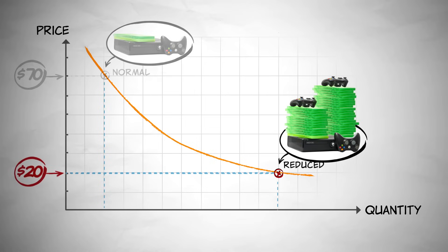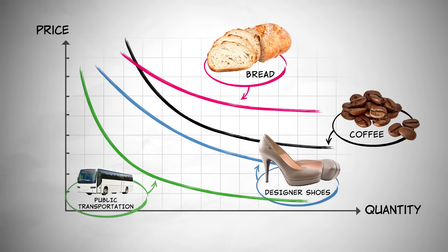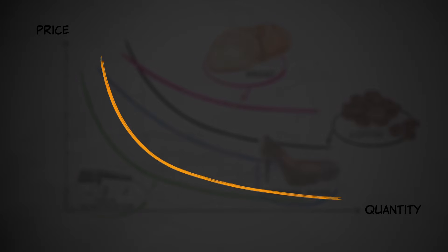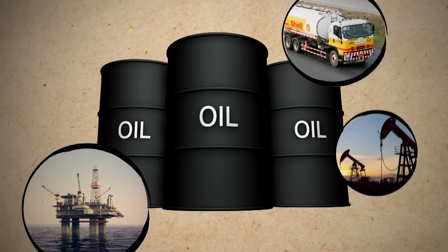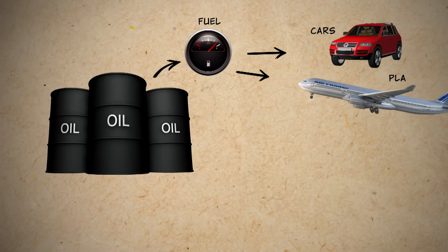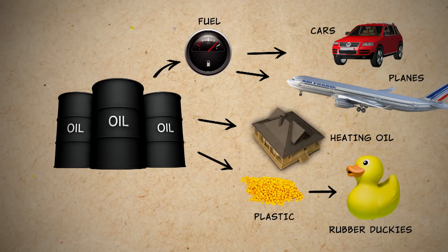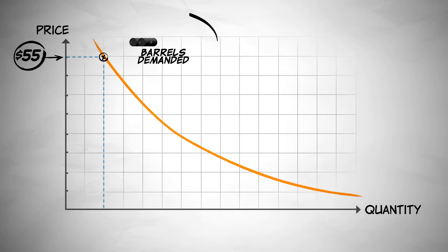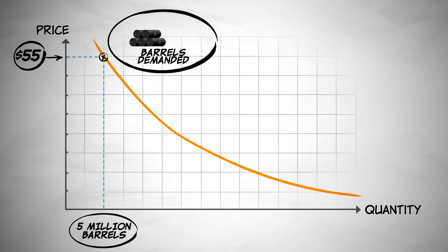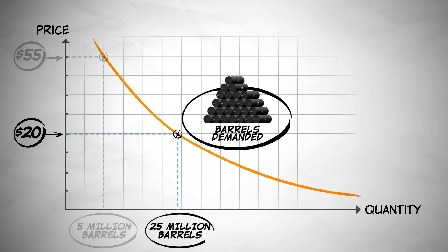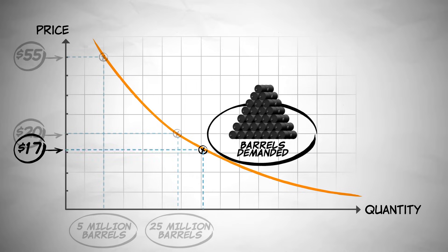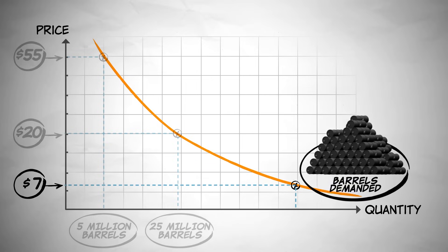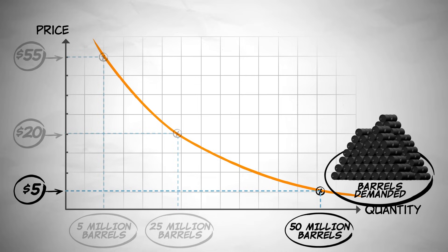There's a different demand curve for every good or service out there, but the ideas are the same. So let's look at the demand curve for one of the most important products in the world: oil. Oil is used in a wide variety of products, from fueling cars and planes to heating homes and making plastic for rubber duckies. Looking at the demand curve for oil, we see a familiar relationship between price and quantity demanded. At a high price — $55 per barrel — that's a relatively low demand, let's say 5 million barrels. At $20 per barrel, 25 million barrels are demanded. As the price goes down, the demand for oil increases, and at $5 per barrel, 50 million barrels of oil are demanded.